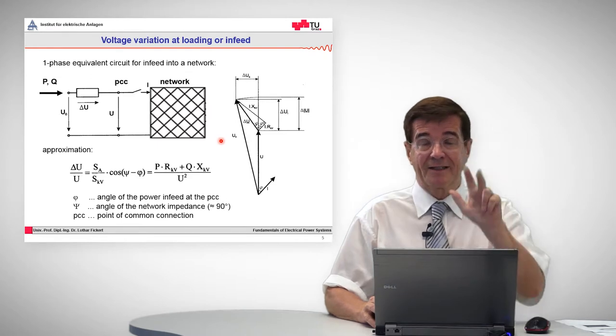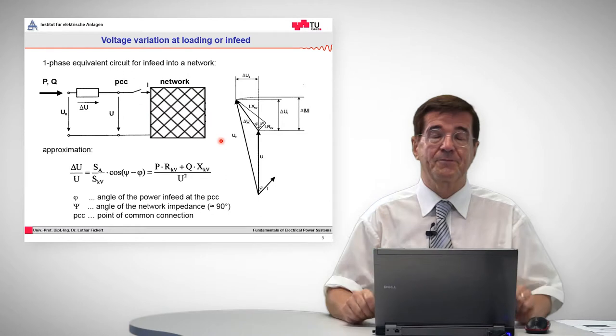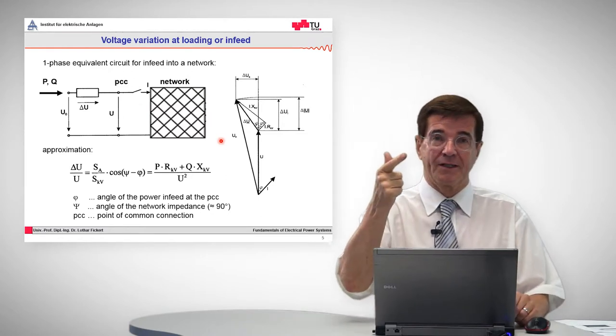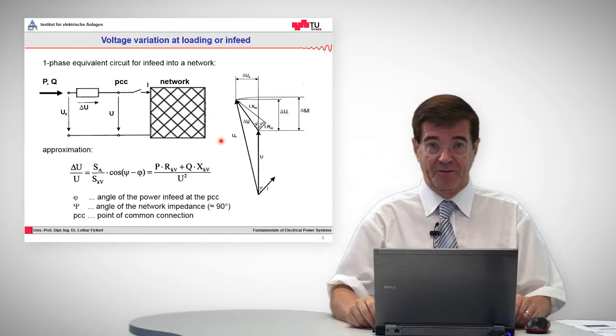There are three items that should be kept in mind when it comes to decentralized generation from today's point of view. One is the voltage stability, the second is the system fault behavior, and the third is the short circuit behavior.